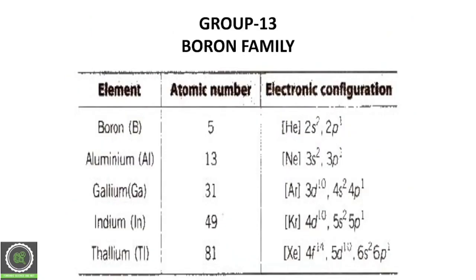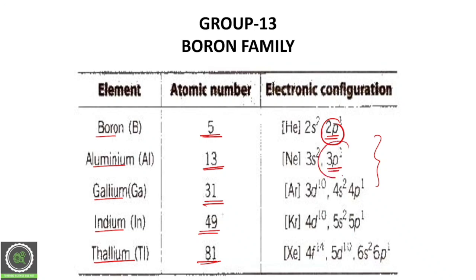Group 13 is the boron family, consisting of boron, aluminium, gallium, indium, and thallium. Their atomic numbers are: boron 5, aluminium 13, gallium 31, indium 49, and thallium 81. Looking at their electronic configurations, in each case the last electron enters the P orbital — there is no P-block entry before boron. This is the boron family.